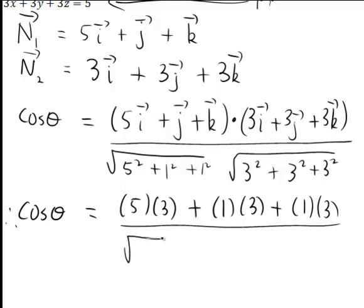And on the denominator, square root of 5 squared plus 1 squared plus 1 squared, that's just the square root of 27. Square root of 3 squared plus 3 squared plus 3 squared, square root of 27 again in this particular case.